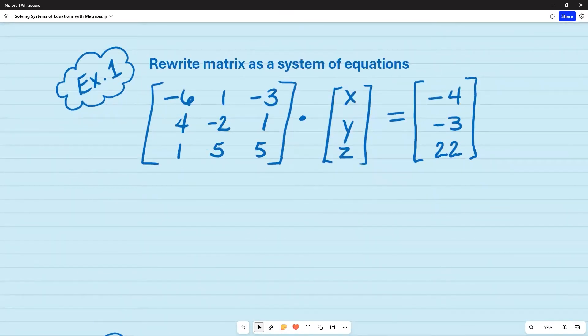For example one, I'm asked to rewrite the matrix as a system of equations. So what I'm going to do is multiply negative six times that first variable, which is x. Then I'm going to take one and multiply times the second variable, which is y. So I don't have to write one y, I can just write y. And then the negative three multiply it times the last variable, which is z.